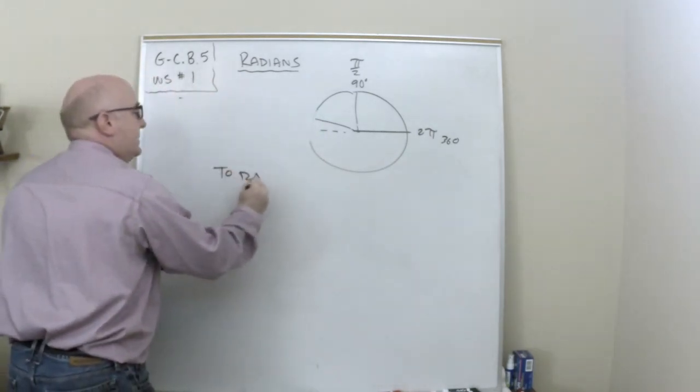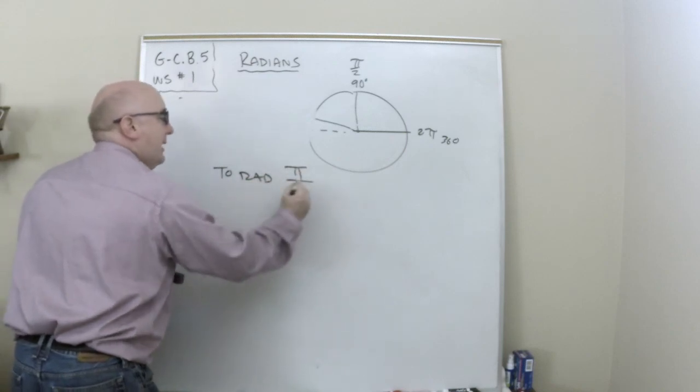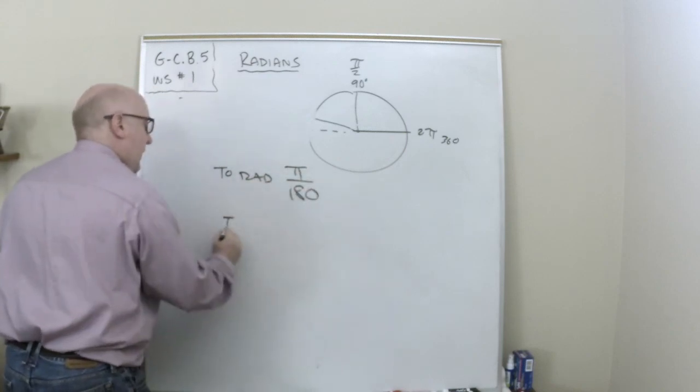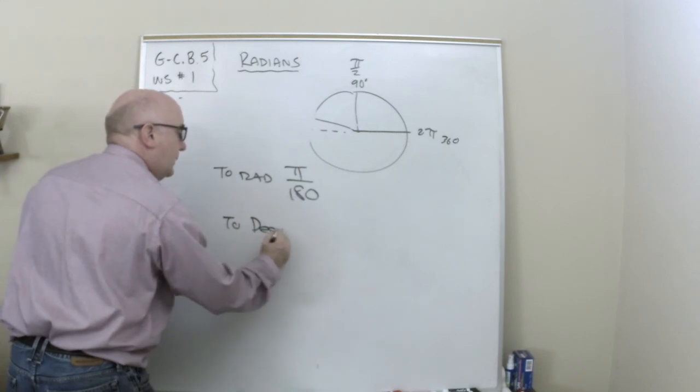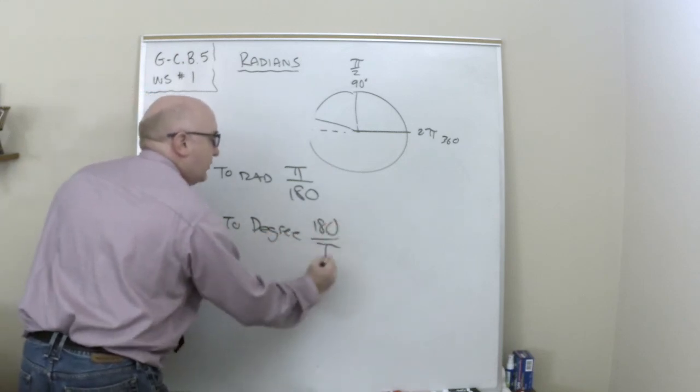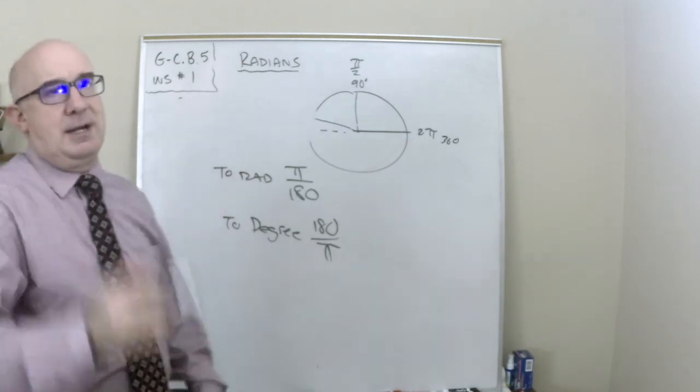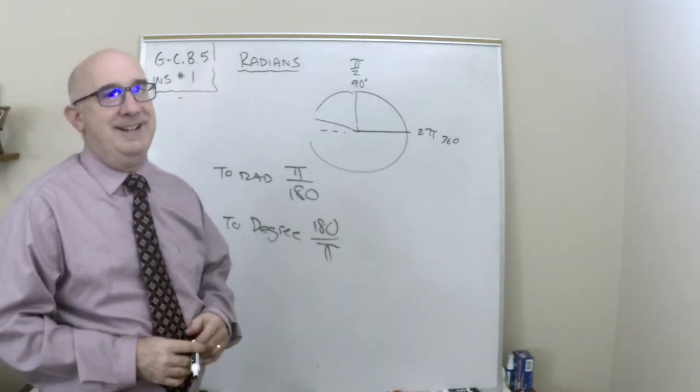If I'm going to radians, I'm putting in the pi and I'm taking out the degrees. If I'm going to degrees, I'm putting in the degrees and I'm taking out the radians. Good luck. That was a lot of talking, but fun.